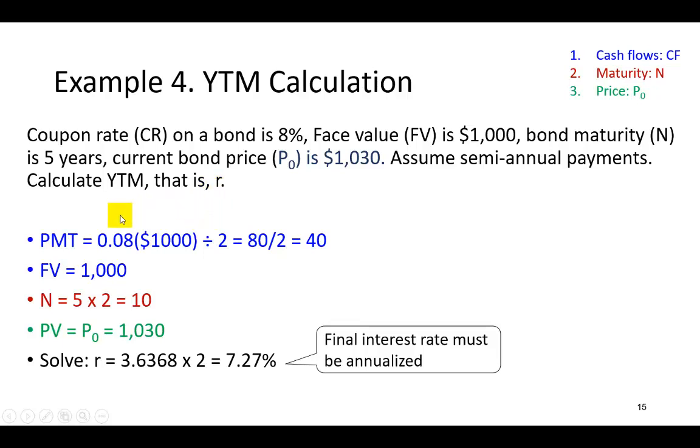So, this is color-coded to facilitate learning. And here, these are the three ingredients we need in valuation. We need to know the expected cash flows. In the case of the bond, it's going to be the periodic coupon payments and the face value. Secondly, we need to know the maturity of the investment or the investment period. And in this case, it's 5 years. Of course, since it pays interest semi-annually, it's going to come out to be 10 periods.